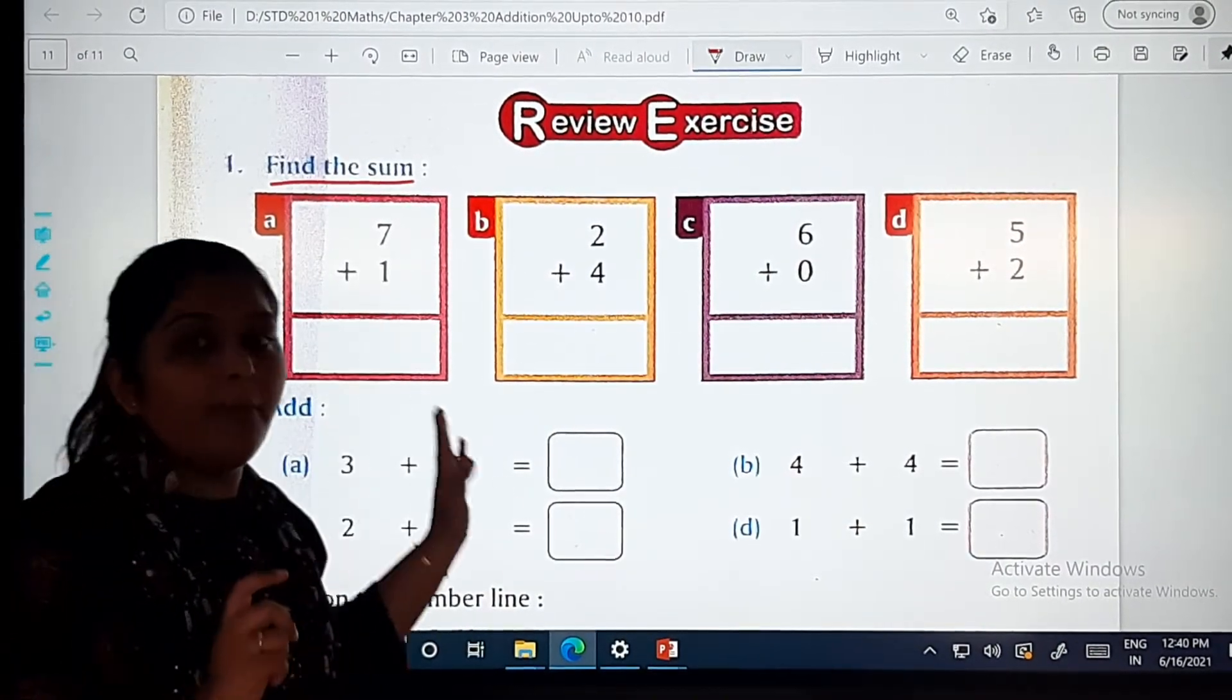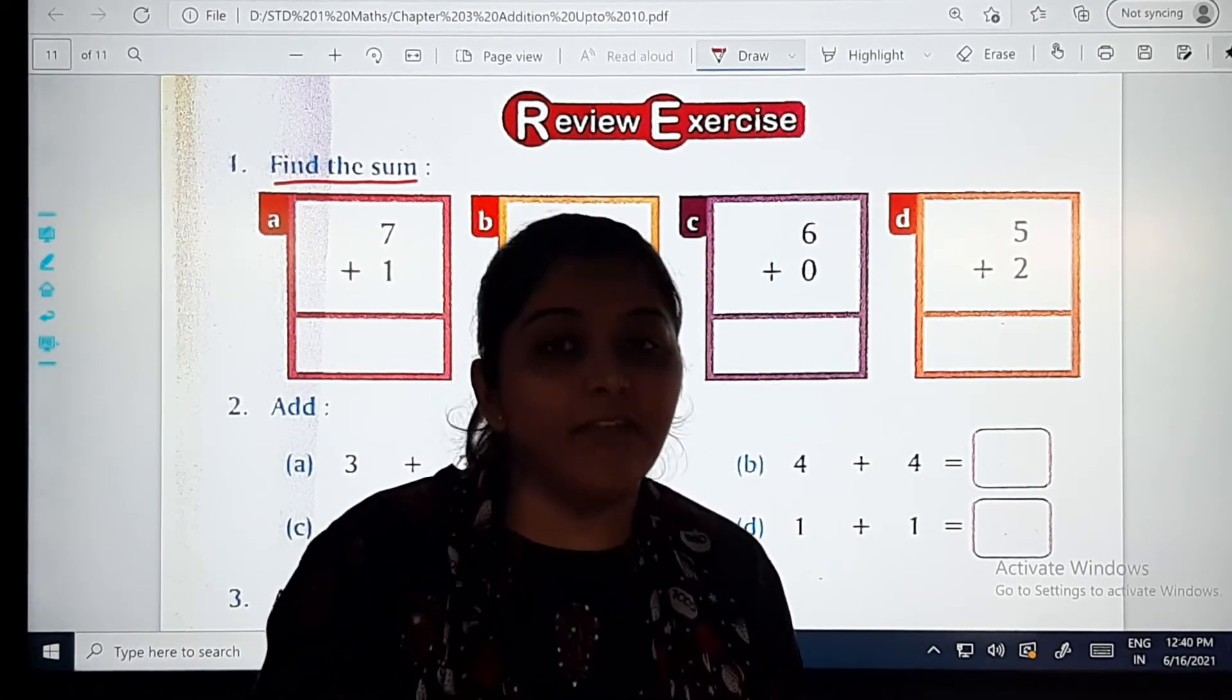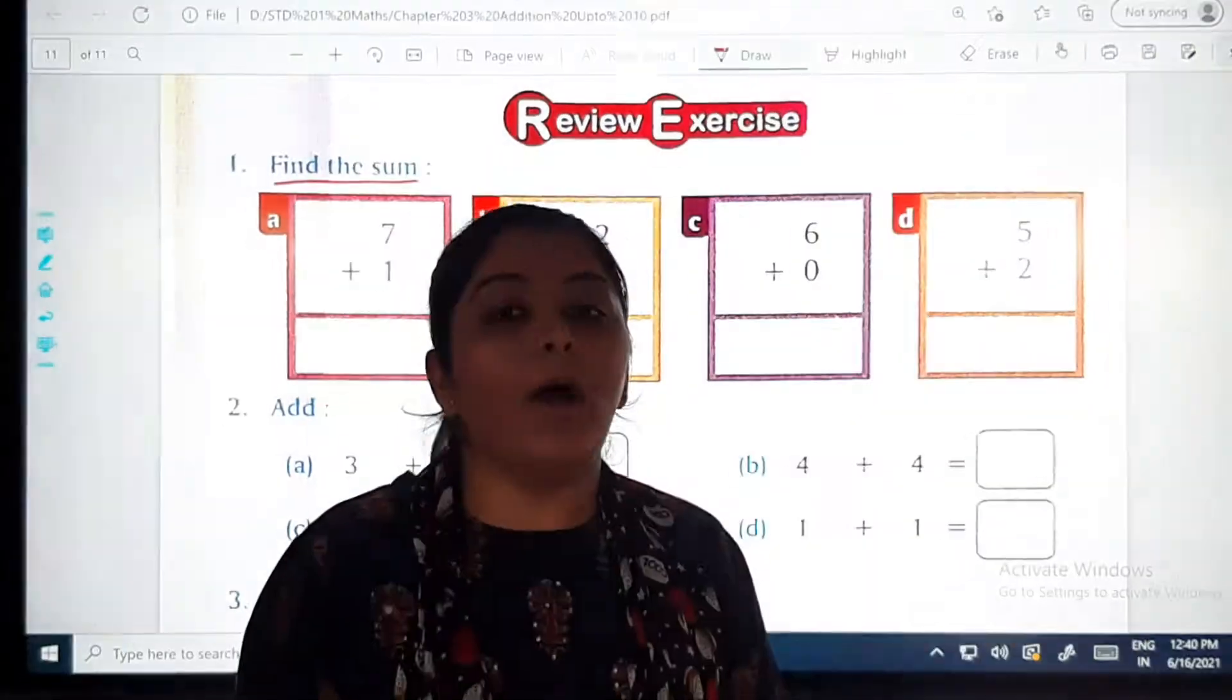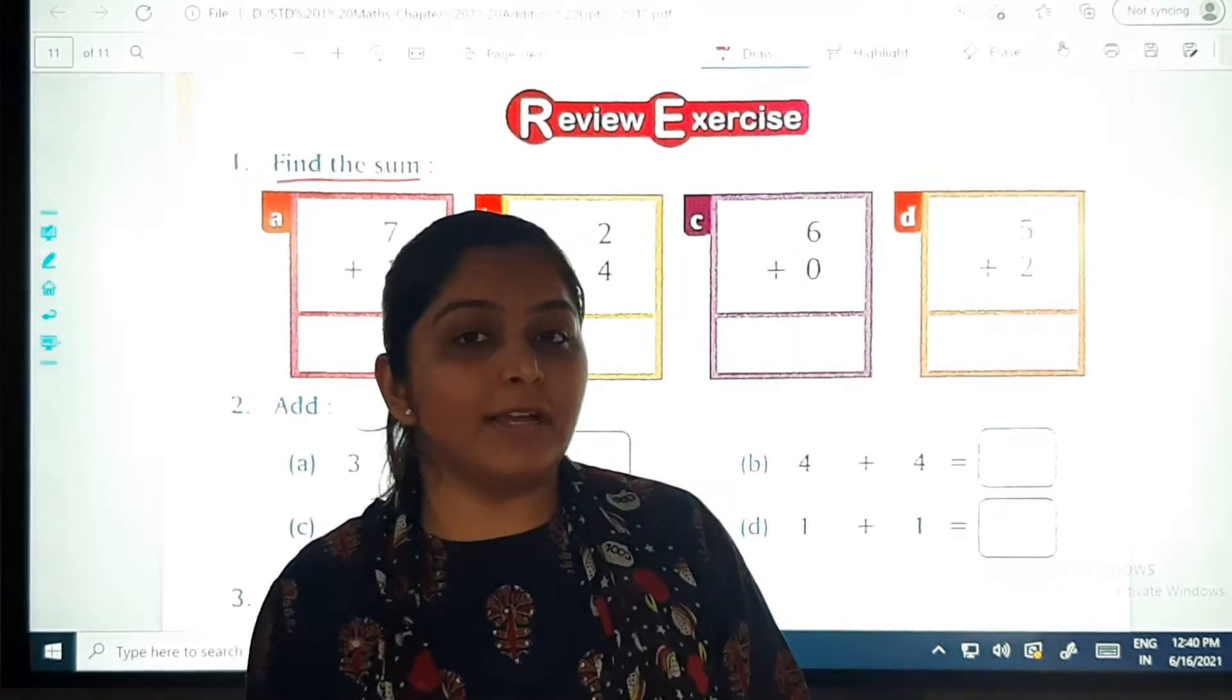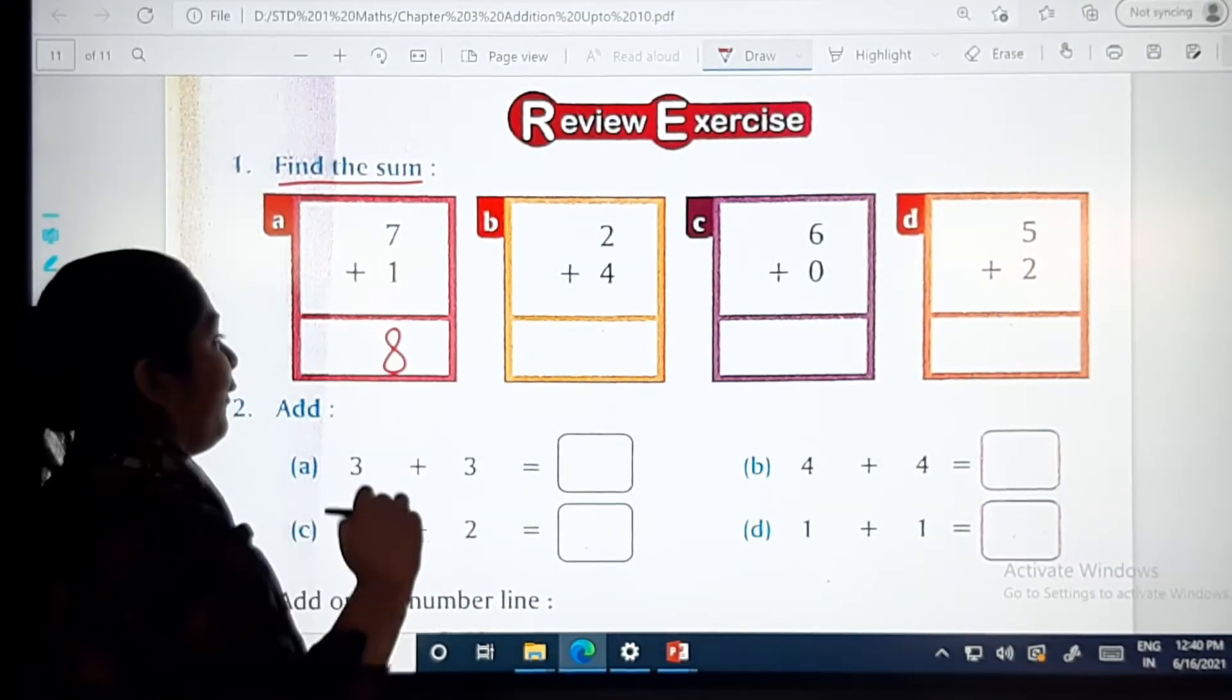The first one: seven plus one. Seven on your fingers. Take seven as base and add one more. So seven plus one is eight, dear children.